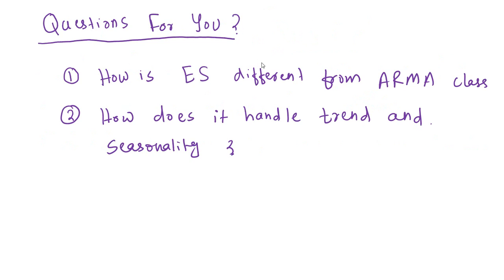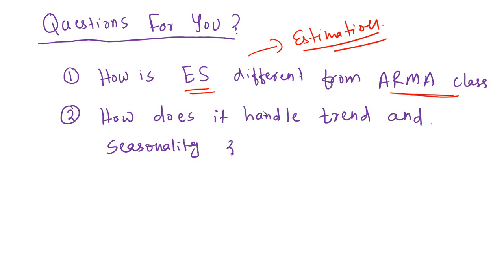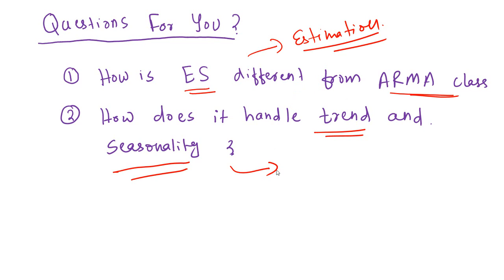Here are two questions for you. The first question, which is often asked in interviews, is: how is exponential smoothing different from the ARMA class of models in terms of the estimation procedure? The second question, which is often asked, is: how does exponential smoothing handle trend and seasonality? Just to give a hint, there are certain classes of exponential smoothing models which can handle trend and seasonality — you can read more about it and find it on Google. Please subscribe to our channel, and thanks until next time.